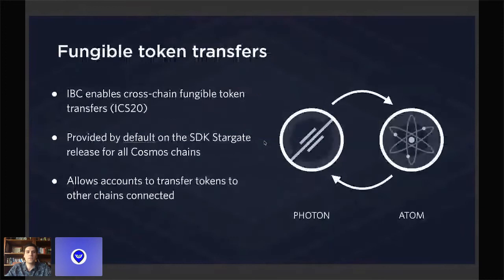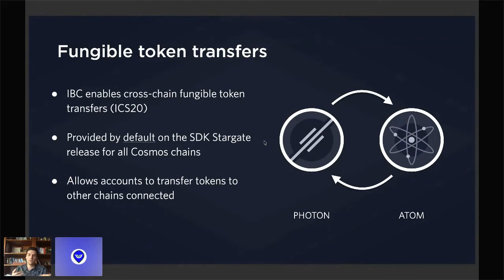The first is fungible token transfers, defined by the ICS-20 standard, which enables cross-chain fungible token transfers. This is natively provided by the Cosmos SDK Stargate release for all Cosmos chains, and what Ethermint is currently working on supporting. This will allow accounts to transfer tokens across all the chains it's connected to. For example, if Ethermint is connected to the Cosmos Hub, you will be able to send atoms and receive them into your Ethermint accounts.